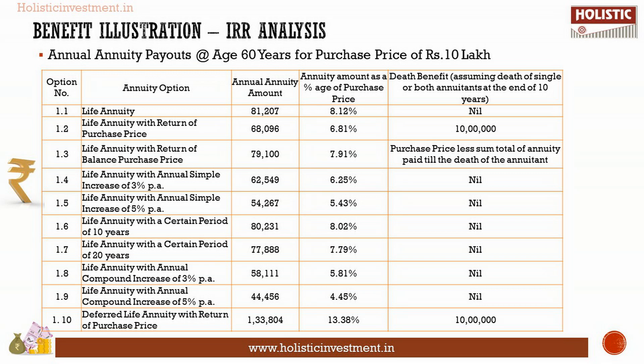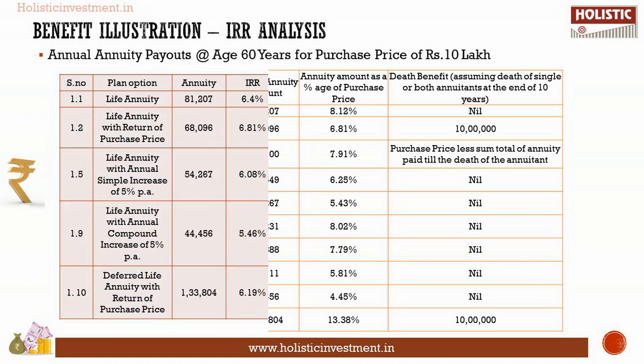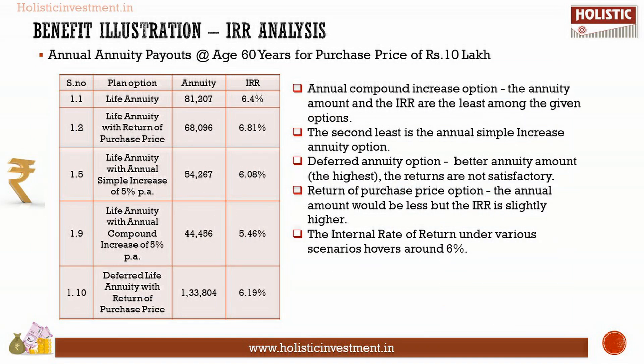Now let us calculate the internal rate of return for some of the plan options. Assumptions for calculation: since it is a lifelong annuity plan, life expectancy is assumed as 85 years; the deferment period is 10 years for the deferred annuity option; and return of purchase price is exercised wherever applicable. Under the annual compound increase option, the annuity amount and the IRR are the least among the given options.